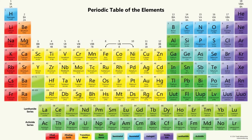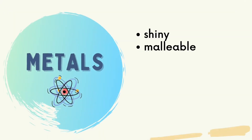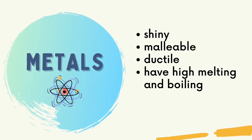The elements in the periodic table are arranged according to their type, whether it is a metal, a non-metal, or a metalloid. Let us first start with metals.